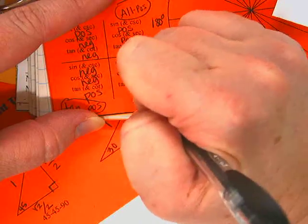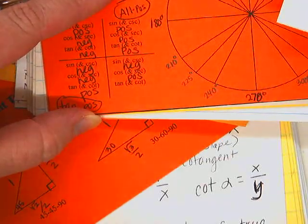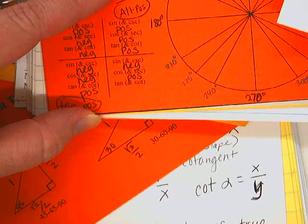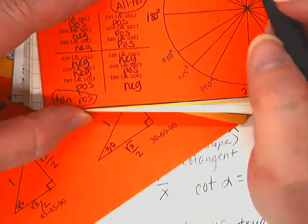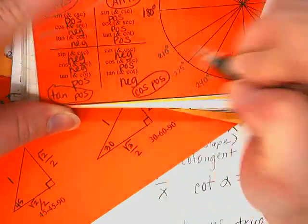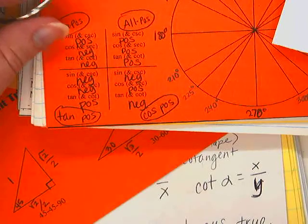Cosine uses x, so that one will be positive. And tangent uses both x and y, one positive and one negative, so that ends up being negative. So what's the only one that's positive? Cosine is the only one that's positive in that quadrant.